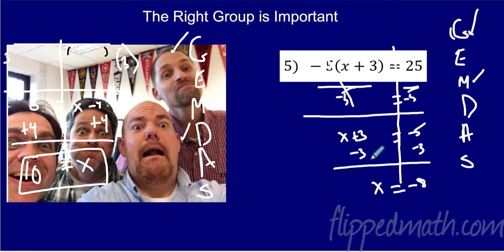And again, you can definitely check that yourself by plugging it in. Negative 8 plus 3 is negative 5. Negative 5 times negative 5 is a positive 25.